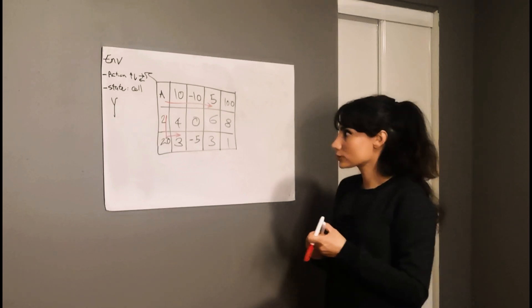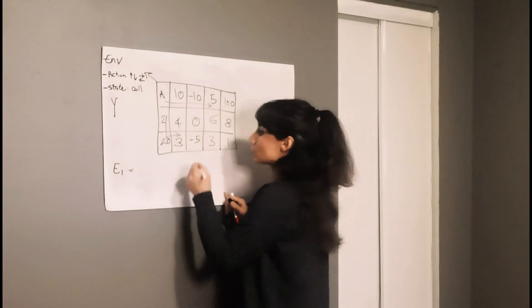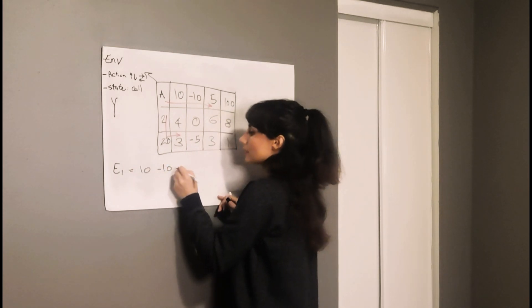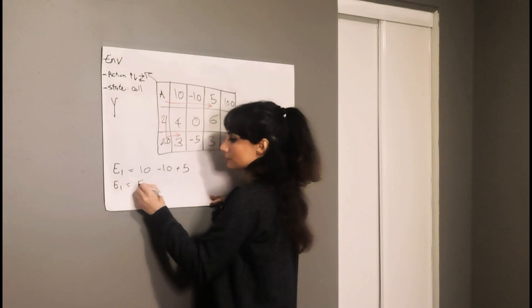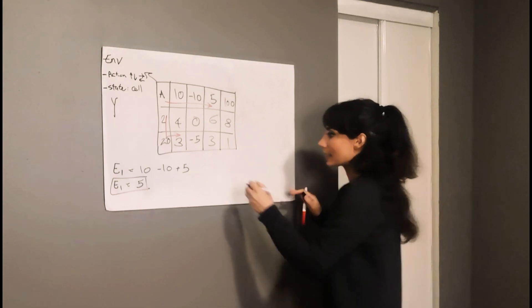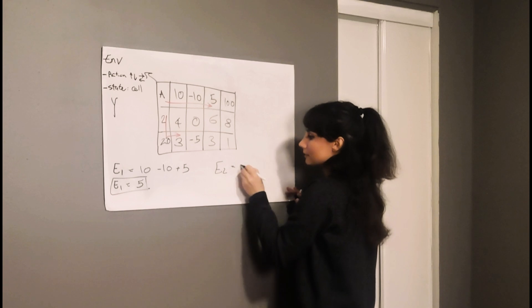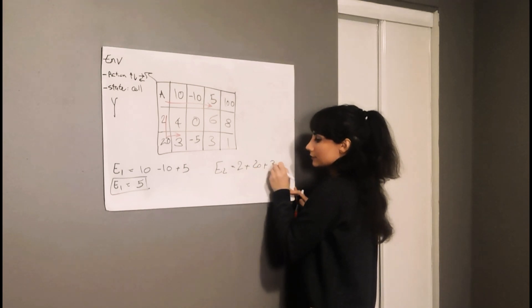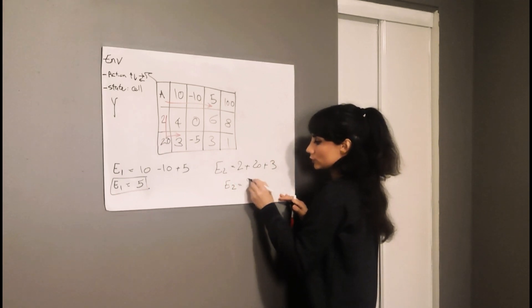Episode 1 equals 10 minus 10 plus 5, so from episode 1 my return was 5. Then episode 2 gives me 2 plus 20 plus 3, and episode 2 gives me 25.